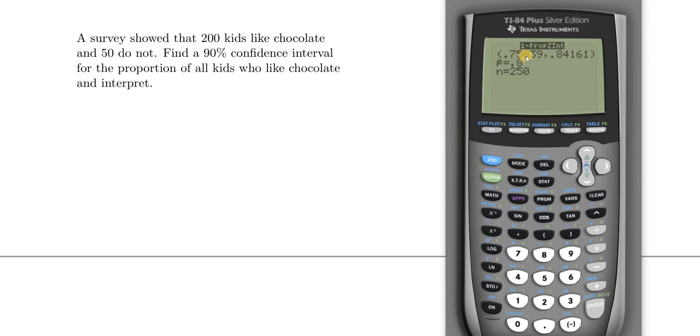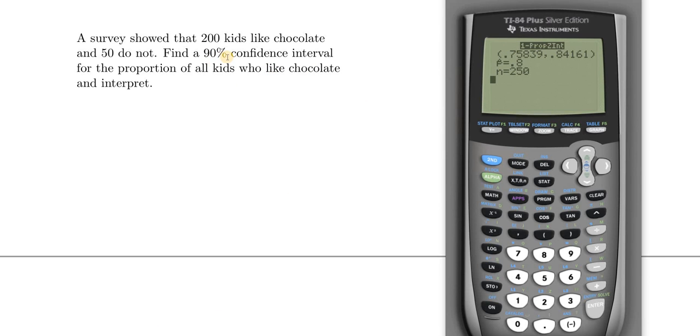And there is the final answer right there in parentheses. If you wanted to interpret this, you would say with 90% confidence, the proportion of all kids who like chocolate is between .76 and .84.